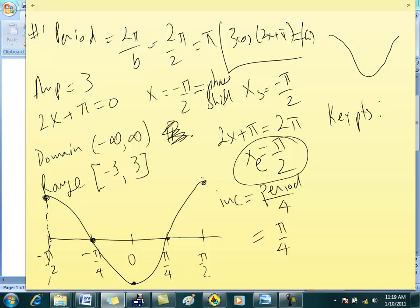So your key points are (-π/2, 3), (-π/4, 0), and then you've got (0, -3), (π/4, 0), and then finally (π/2, 3). Sorry?